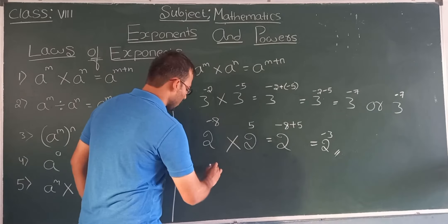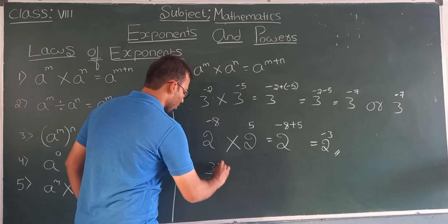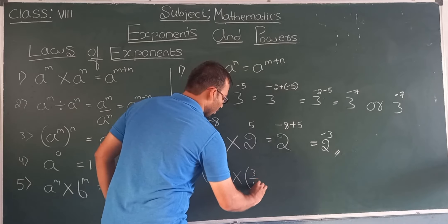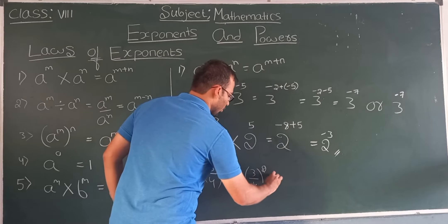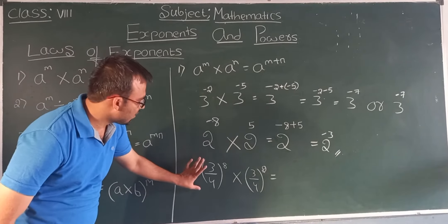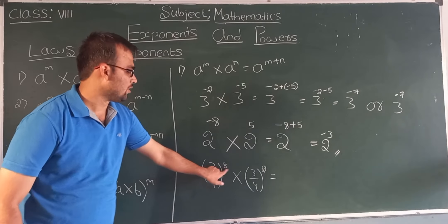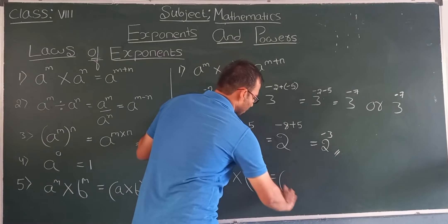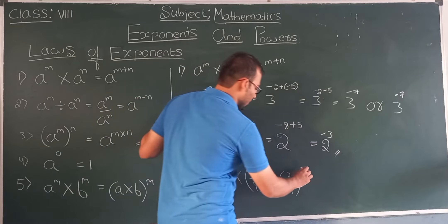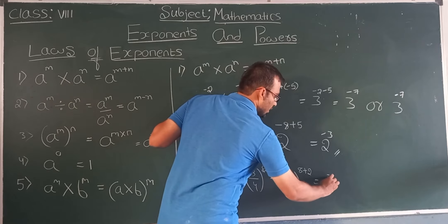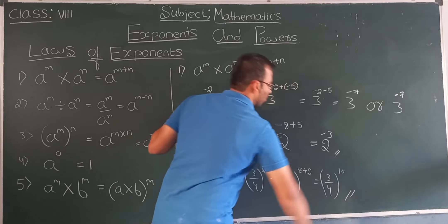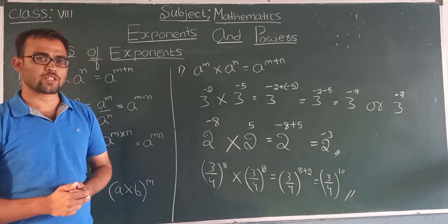Now let us take one more example: 3/4 to the power 8 multiplied by 3/4 to the power 2. Here the base is 3/4 and the powers are 8 and 2. Keeping the base and adding powers: 3/4 to the power 8 plus 2 equals 3/4 to the power 10. This is all about the first law of exponents.